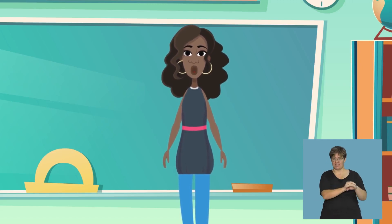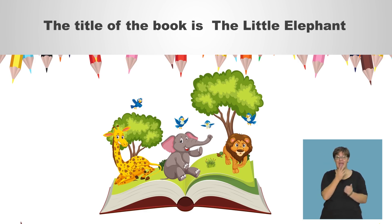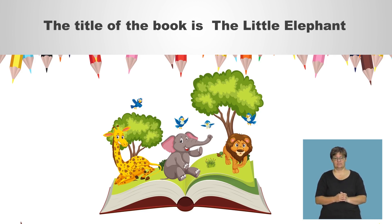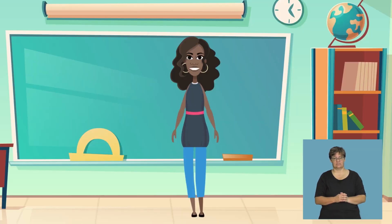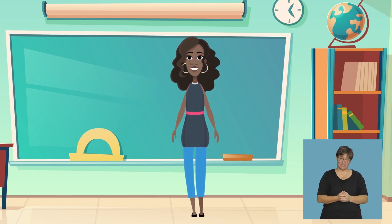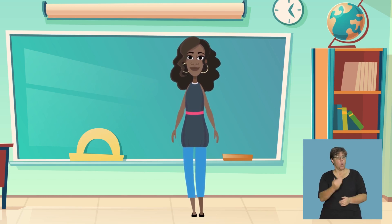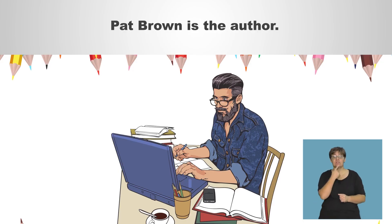Let's pretend you have to read a book called The Little Elephant. You would say, 'The title of the book is The Little Elephant.' Now you try — Grade 3s, what's that book called? Thanks for telling me. We call the person who writes books an author. Let's pretend that Pat Brown wrote the book. How would you answer the question: who is the author of that book? You'd say, 'Pat Brown is the author.' Now you try — Grade 3s, who wrote that book?